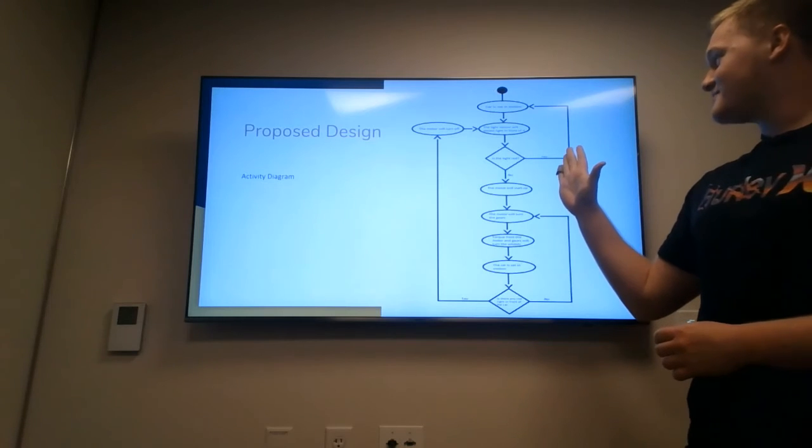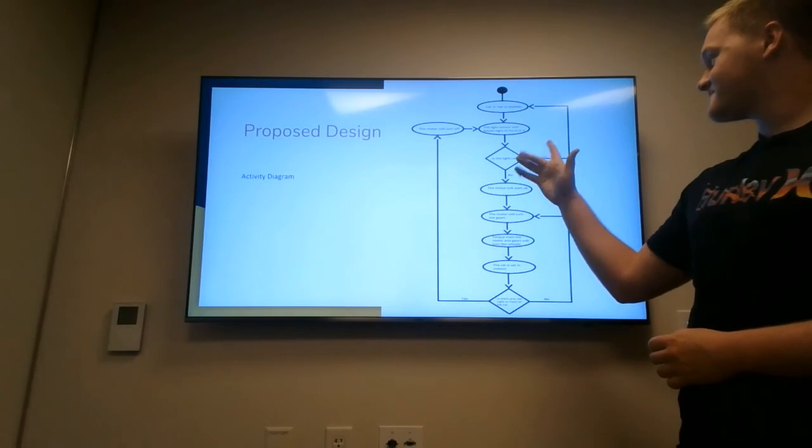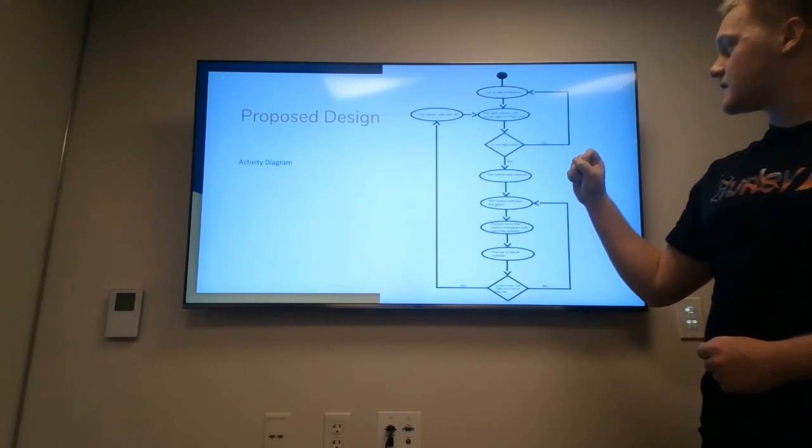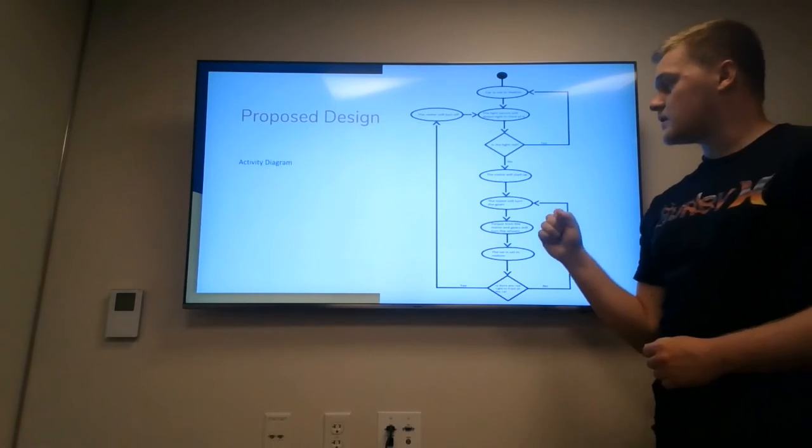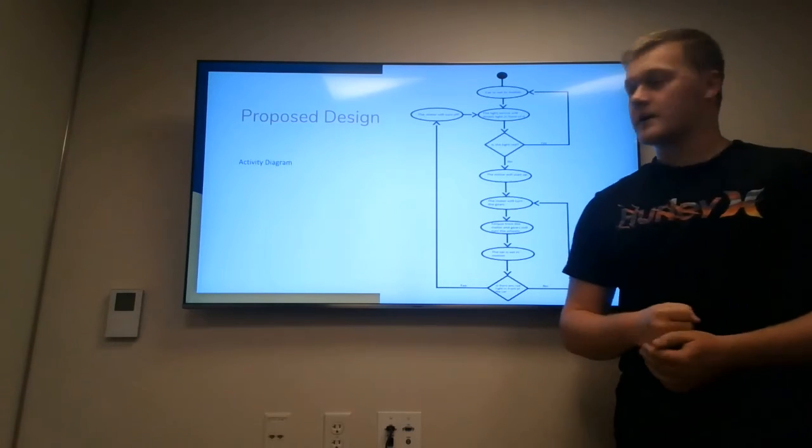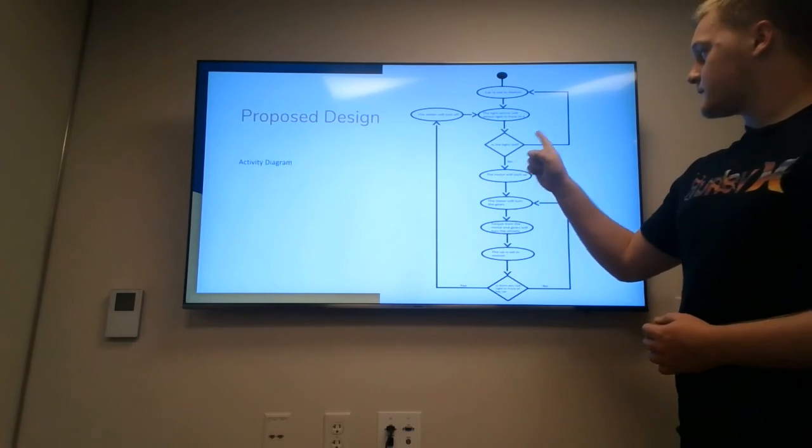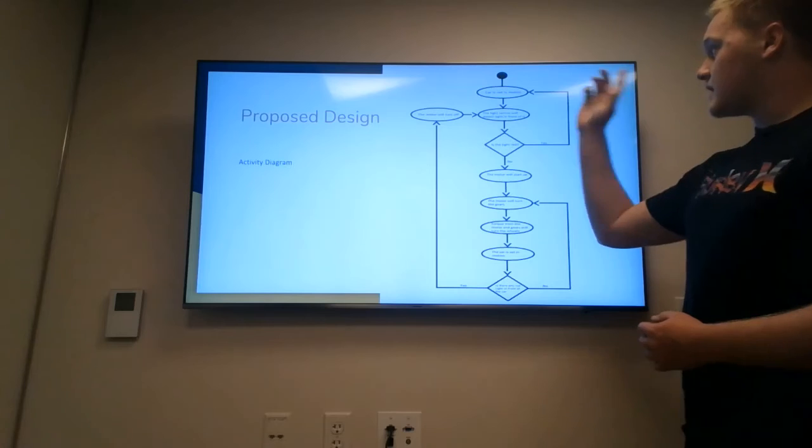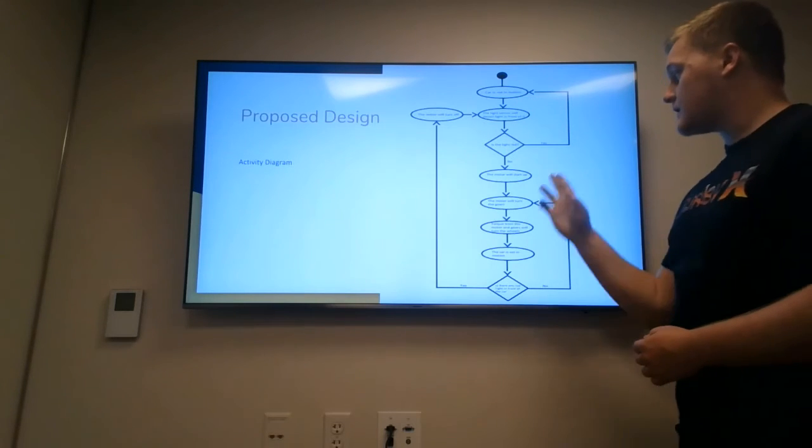This diagram shows the automation along with the light sensor and the motor that powers the car. By detecting if the light in front is red, it'll stay stopped. If the light is not red, it'll start up the motor and get the car moving.